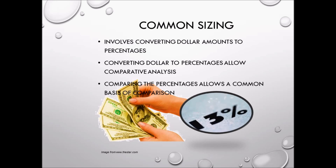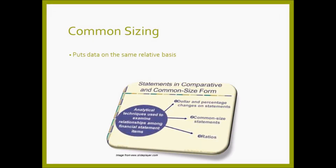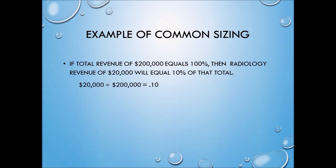Now let's go to common sizing. Common sizing involves converting dollar amounts to percentages. Converting dollars to percentages allows comparative analysis, and comparing the percentages allows a common basis of comparison. Common sizing puts data on the same relative basis. For example, if total revenue of 200,000 equals 100%, then radiology revenue of 20,000 will equal 10% of that total — so 20,000 divided by 200,000 equals 10%.